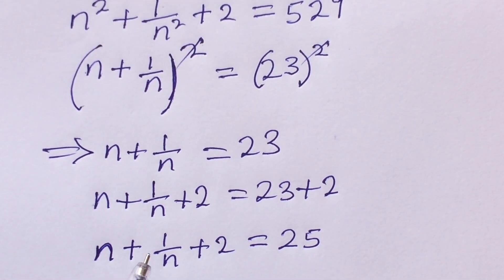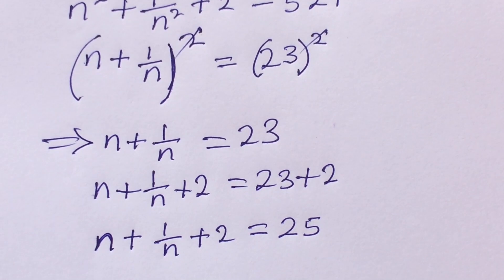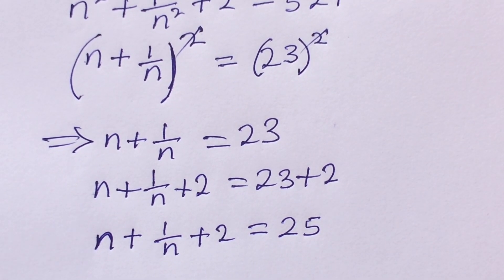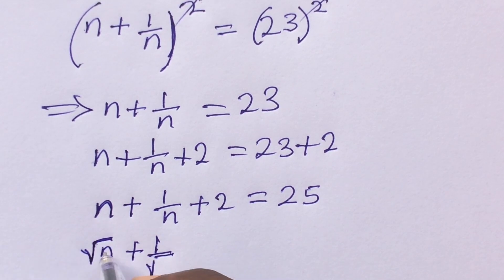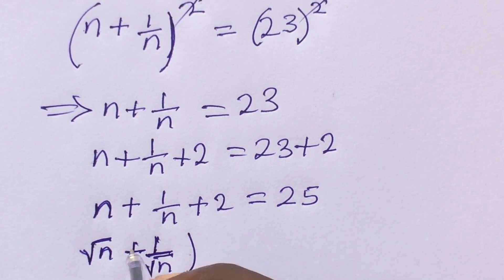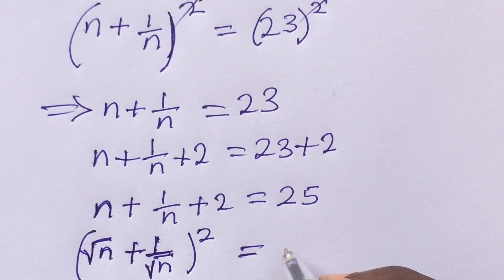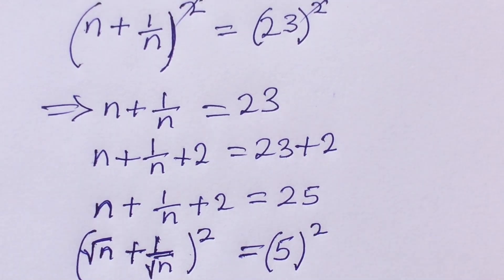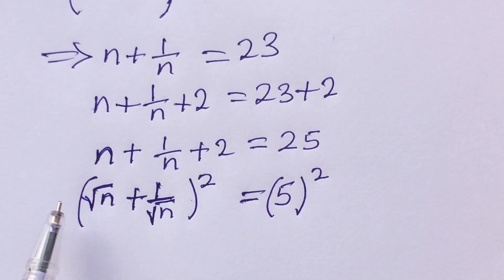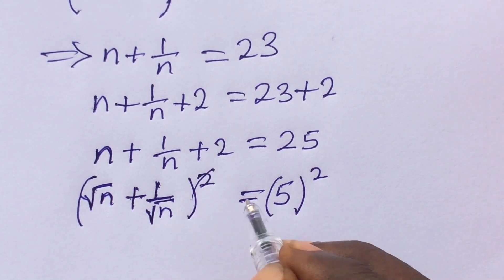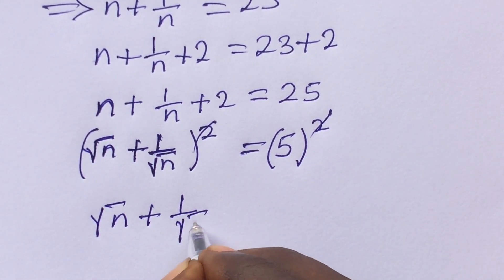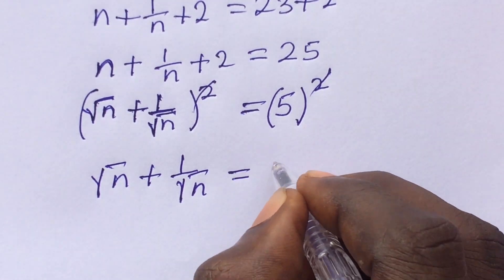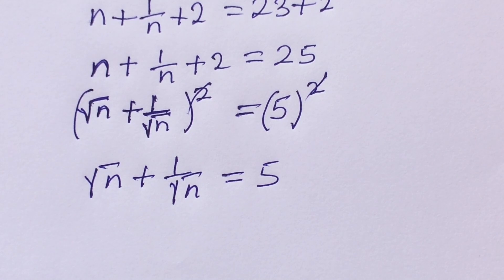The left-hand side is now a perfect square. Using binomial expansion, we can rewrite it as (√n + 1/√n)² = 5². Cancelling the squares on both sides gives us: √n + 1/√n = 5.